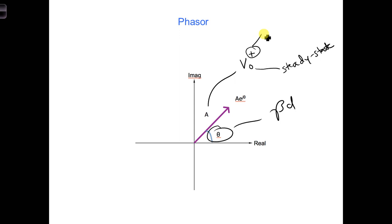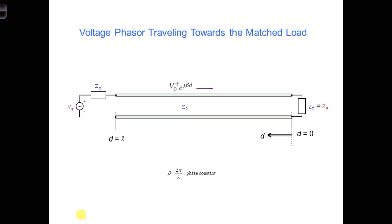So notice it's plus here. It's not in the positive z direction anymore. We're going to be consistent, though, and say that plus always means it's going towards the load, whether we're using the z or the d coordinate system. Here is the matched transmission line, including the voltage phasor traveling from the generator towards the load. The voltage anywhere along this line is given by this voltage phasor.